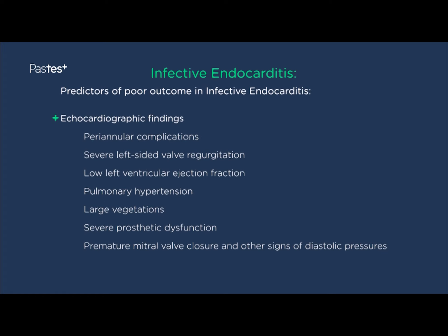Echocardiographic findings can also help predict poor outcome in infective endocarditis. Findings to be most wary of include periannular complications, severe left-sided valvular regurgitation, low left ventricular ejection fractions, pulmonary hypertension, very large mobile vegetations, severe prosthetic dysfunction, premature mitral valve closure, and other signs of diastolic pressure rise.